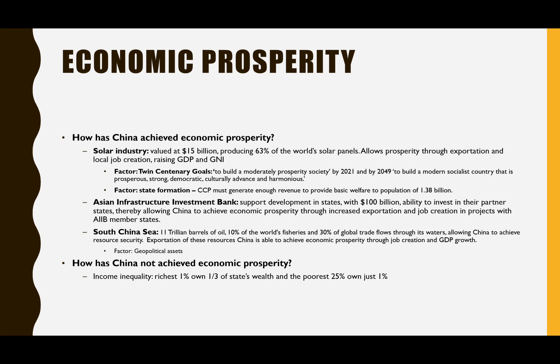Let's talk about how China has specifically tried to build prosperity. The first example is China's solar industry. China has made great progress with its solar industry, which came about around 2013. They decided to expand their renewable energy industry through exporting and also domestically installing it, which helped create jobs. In 2020, the solar industry was valued at $15 billion and produced 63% of the world's solar panels. This has helped achieve economic prosperity by creating local jobs and increasing China's GDP and gross national income.